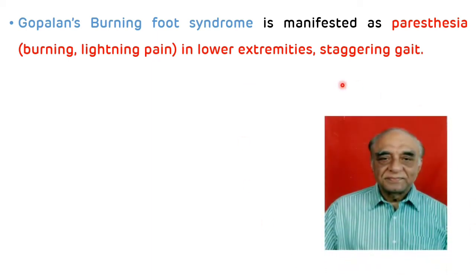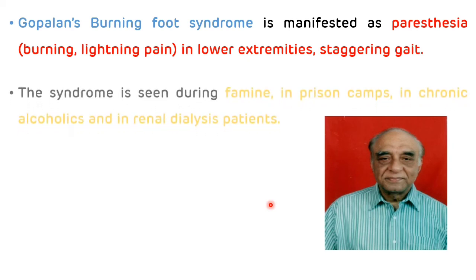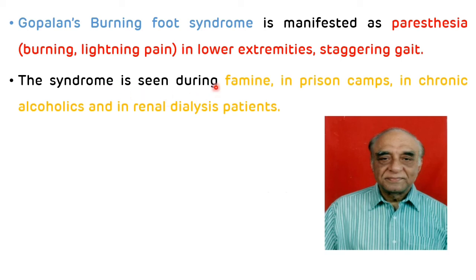This is the picture of Dr. C. Gopalan, who is the former director general of ICMR and nutritionist. This Gopalan's burning syndrome is seen during famine, in prison camps, in chronic alcoholics, and in renal dialysis patients. So that is all about pantothenic acid. Now we will see multiple choice questions.